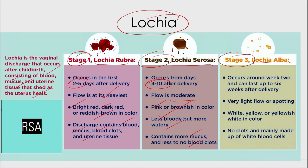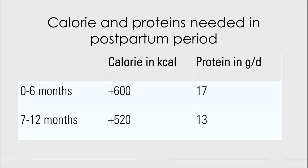Lochia alba occurs around 2 weeks and can last up to 6 weeks after delivery, with very light flow or spotting. The discharge is white, yellow, or yellowish white in color, with no clots, and is mainly made of white blood cells. In summary, the 3 stages are lochia rubra, lochia serosa, and lochia alba.